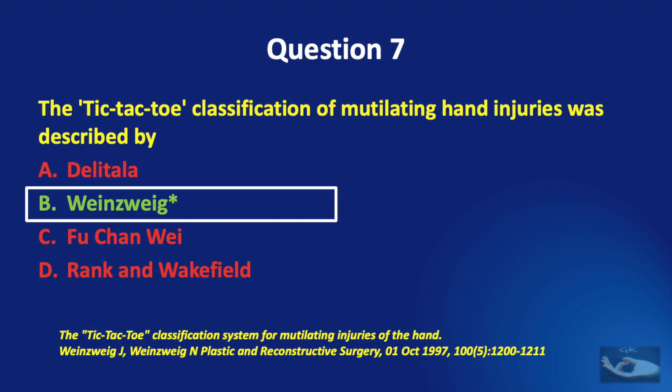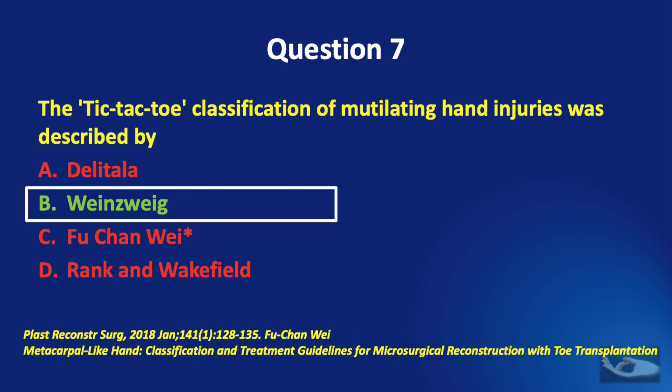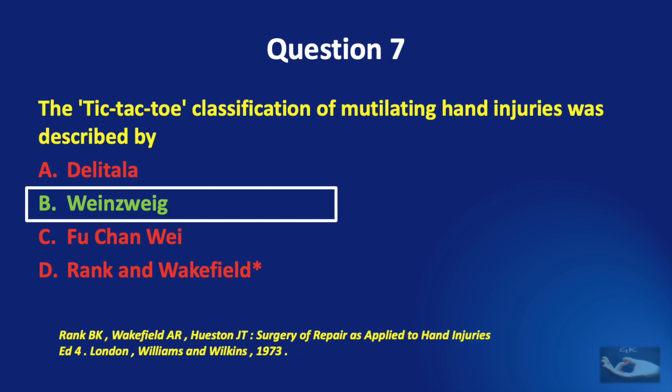The correct answer is Weinzweig. This classification was proposed by Jeffrey Weinzweig and Norman Weinzweig in 1997. Foo Chan-wee's classification was mainly for the metacarpal-like hand, and the Rankin-Wakefield classification divided injuries into tidy and untidy injuries.